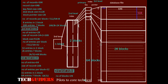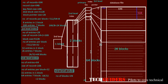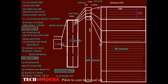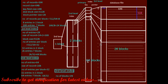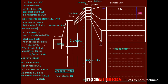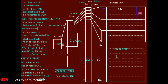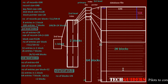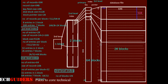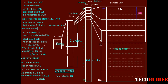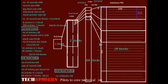Without multilevel indexing, only the first level index exists with 64 blocks. A binary search on this index requires on average log base 2 of 64, which is 6 disk block accesses from the index, plus 1 extra block to access the real record, giving 7 disk block accesses. With multilevel indexing, only 4 disk block accesses are required, and if the top level index is kept in main memory, only 3 disk blocks need to be accessed. This is how disk block accesses are reduced using multilevel indexing.